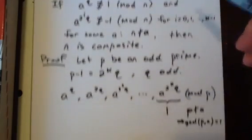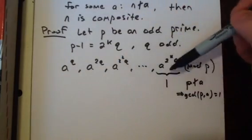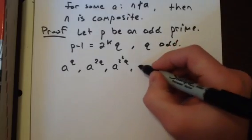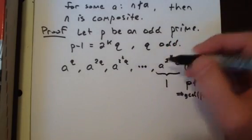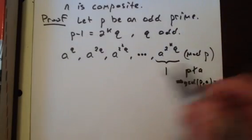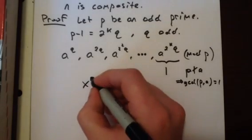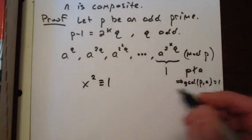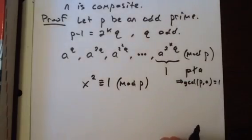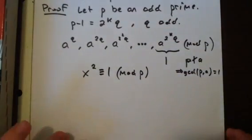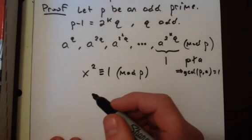So let's assume some number in this list is not 1. But then eventually that number is squared and it becomes 1. So we want to consider now the solutions to the equation x squared congruent to 1 mod p, where p is prime.